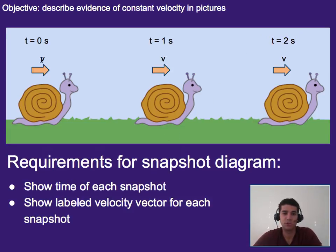You need to include labeled velocity vectors for each snapshot, showing us the size of the velocity. In this case, since the velocity is staying constant, the velocity vector is staying the same size. If the velocity was changing, either getting faster or slower, we would show velocity vectors that are bigger and smaller depending on whether it's getting faster or slower.